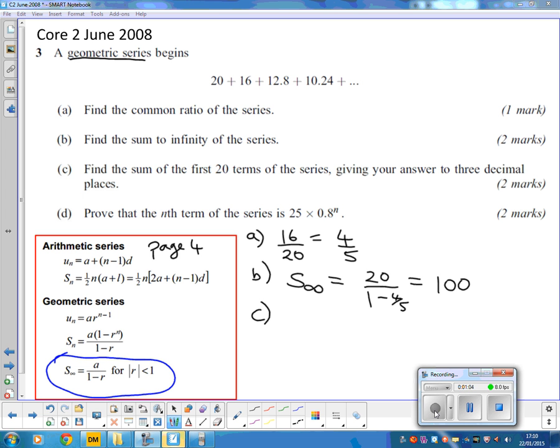Then for part C, they want the sum of the first 20 terms. Again we've got a sum formula in the formula book. The sum of the first 20 terms is A, the first term, times 1 minus the common ratio to the power of N. Well N is how many terms we want to add up, which is 20,